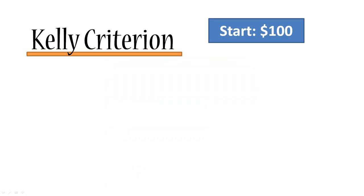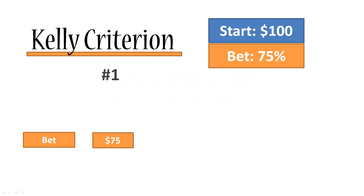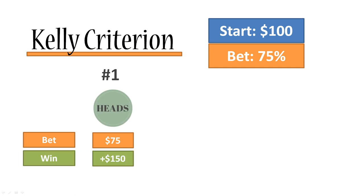To start off with, let's say we have $100 on our account. Because this is such a great opportunity, we're going to bet 75% of our account on every coin toss. Here's the first coin toss — we are betting 75% of $100, which is $75. It's heads! We win $150 — double the amount we're betting. Our current balance is $150 plus our starting balance of $100, which is $250.